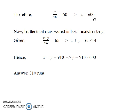Now suppose the total runs scored in last 4 matches be y. It's given that the average for total 14 games is 65. Hence x plus y divided by 14 equals 65, which implies x plus y equals 910 or y equals 310. Therefore in the last 4 matches Sachin made 310 runs.